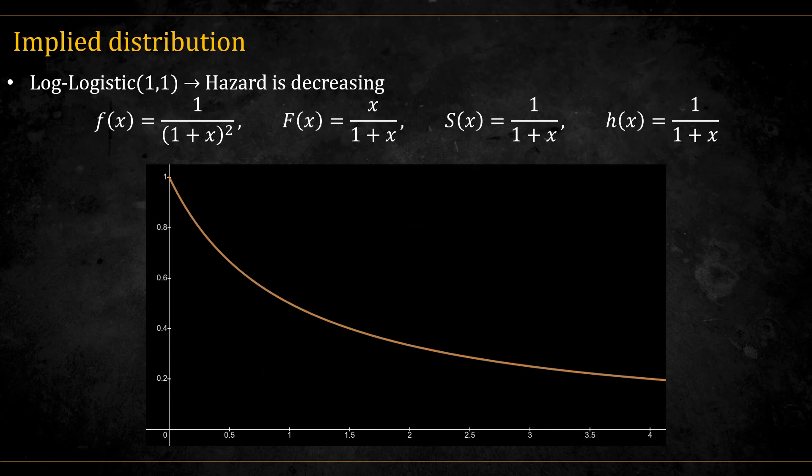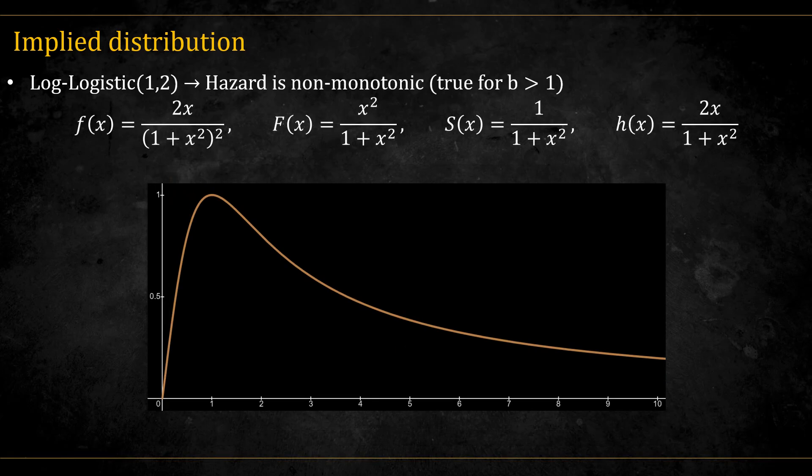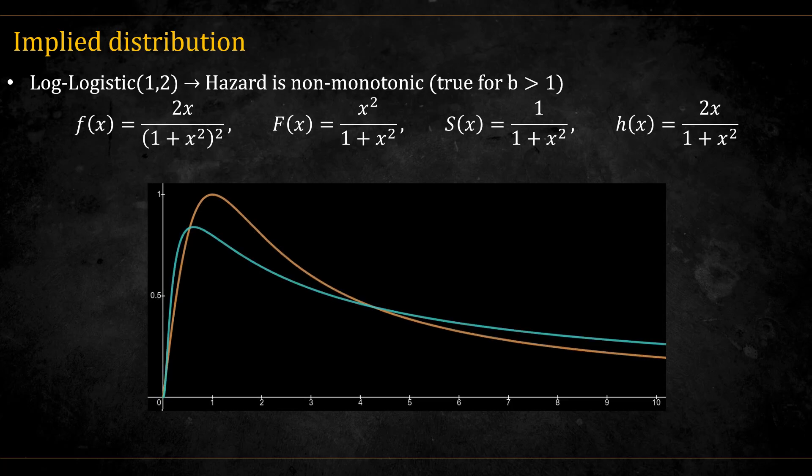The hazard for the log logistic 1, 1 is shown in this graph and is always decreasing. But if we increase b to be above 1, we get a graph similar to the one over here, which depicts the hazard for the log logistic 1, 2. The overall shape resembles the log normal. Here you can see both the log logistic 1, 2 and the log normal, 0, 1 side by side.